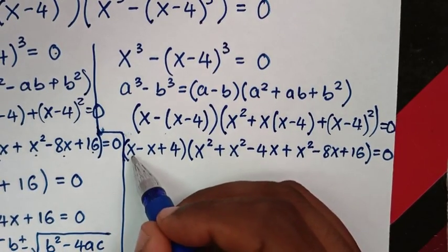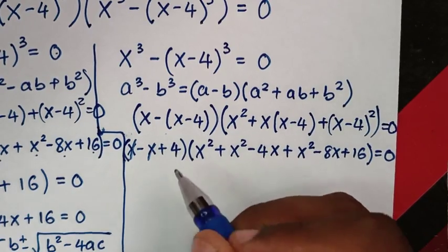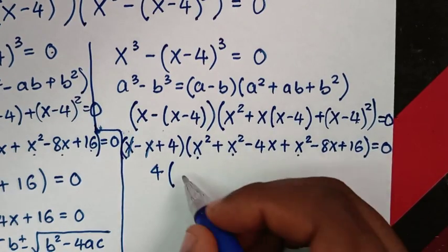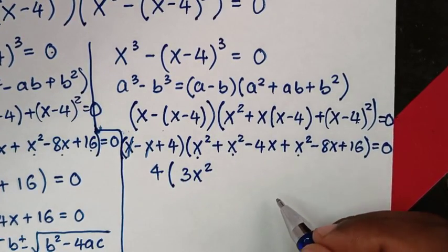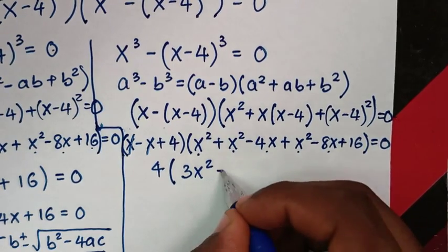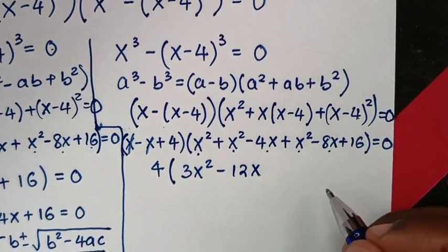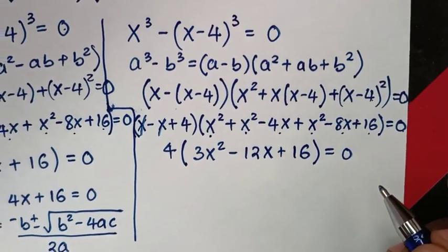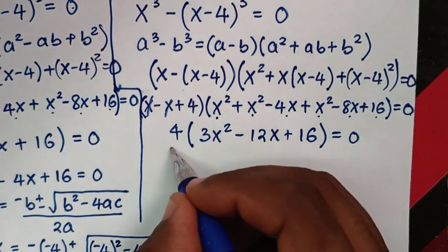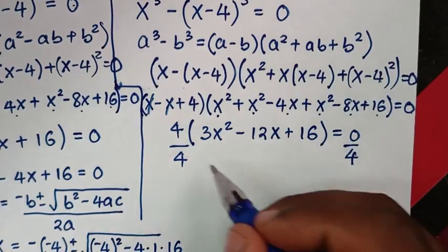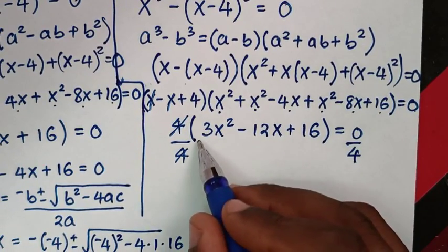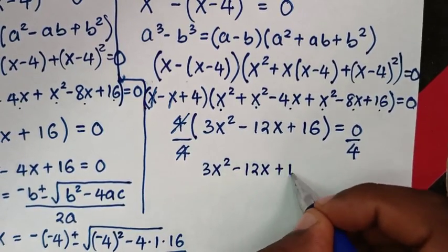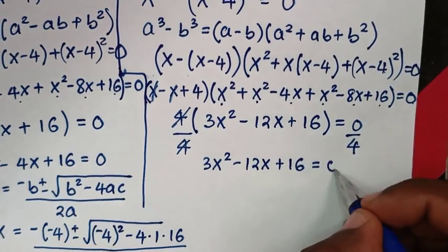Expanding: x minus x cancels, leaving 4. In the second bracket, x squared plus x squared plus x squared is 3x squared, minus 4x minus 8x is minus 12x, then plus 16, bracket, is equal to 0. Dividing both sides by 4, it will be 3x squared minus 12x plus 16 equals 0.